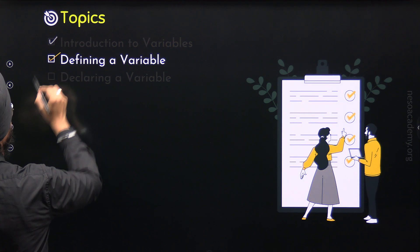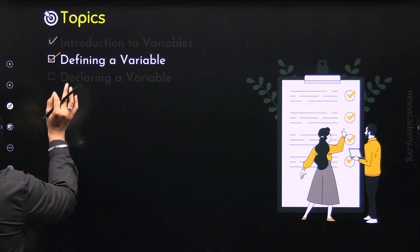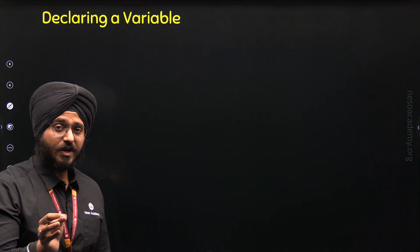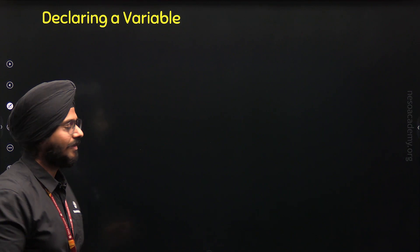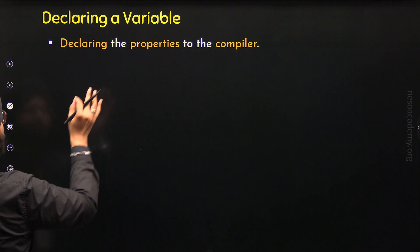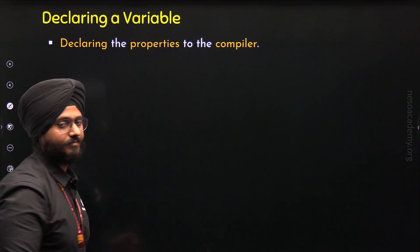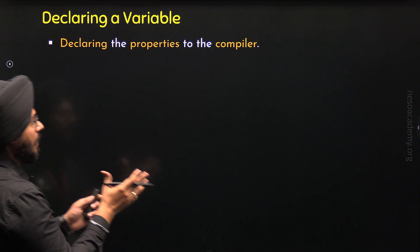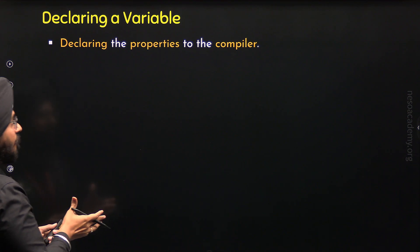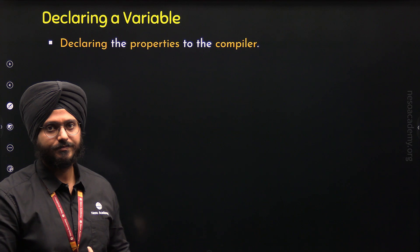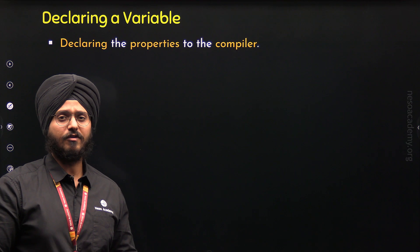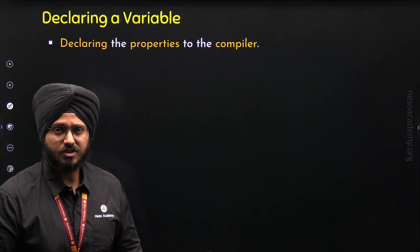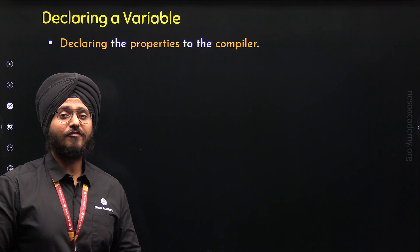Now let's move to the third topic and understand the concept of declaring a variable in C++. Declaring a variable means declaring the properties of that variable to the compiler — telling the compiler what is the name of the variable and what type of value it can hold. You might be thinking this is the same job we do with definition. When we define a variable, we declare its properties and also request a memory block. So what is the need of declaring a variable separately?